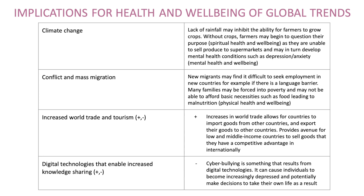Just to note that the dimension of health and well-being being referred to is included in brackets for the examiner. For conflict and mass migration, new migrants may find it difficult to seek employment in new countries — for example, if there is a language barrier. Many families may be forced into poverty and may not be able to afford basic necessities such as food, leading to malnutrition.